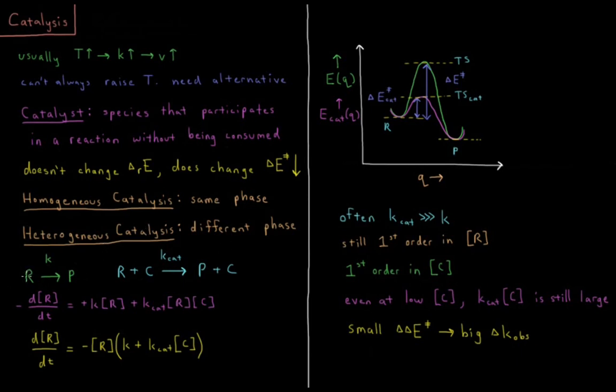Alright, so let's assume we have two pathways here to produce a product from a given reactant. We have the uncatalyzed pathway, R goes to P with rate constant k. Or we have the alternative, R plus a catalyst goes to the product plus a catalyst with the rate constant of k_cat.